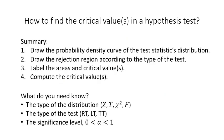In summary, to find the critical values in a hypothesis test: first draw the probability density curve of the test statistic's distribution; then draw the rejection region according to the type of the test; then label the areas and use proper notation to label critical values; and finally compute the critical values using your knowledge of probability density curves and alpha notation. To do this, you must know the type of the distribution, the type of the test, and the significance level alpha.